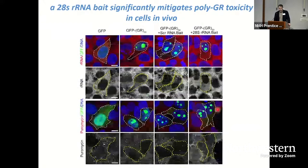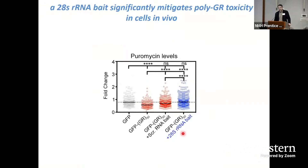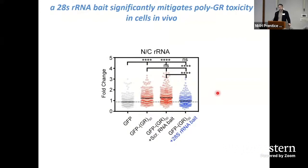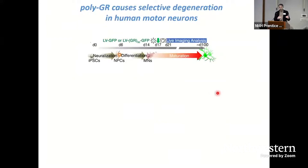We then utilized this bait to understand whether we can mitigate the toxic effects associated with polyGR. In a cellular model system, we delivered polyGR along with either the bait or the scrambled control. In the presence of the 28S ribosomal RNA bait, we see an increase in translation levels in these cells and a concomitant decrease in the nucleolar-to-cytoplasmic ratio of ribosomal RNA — which are the downstream defects of polyGR binding to ribosomal RNA.